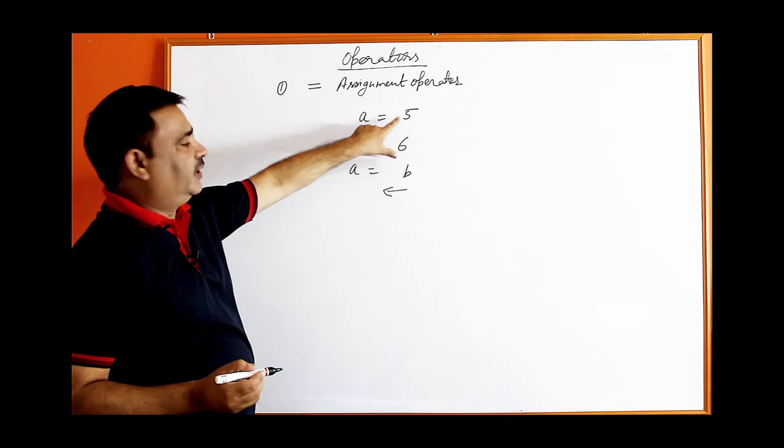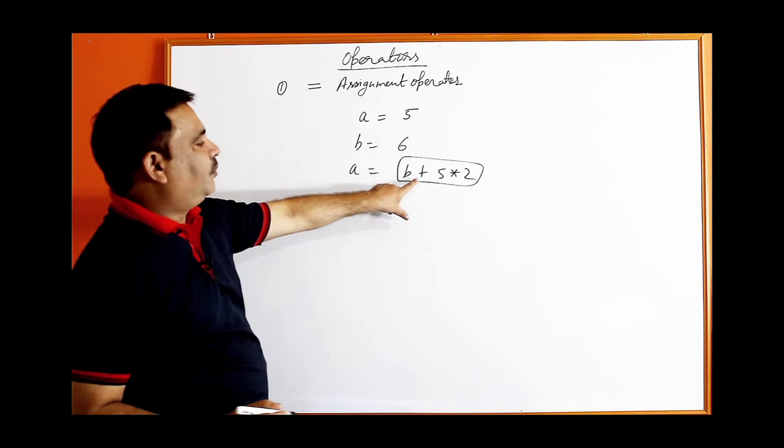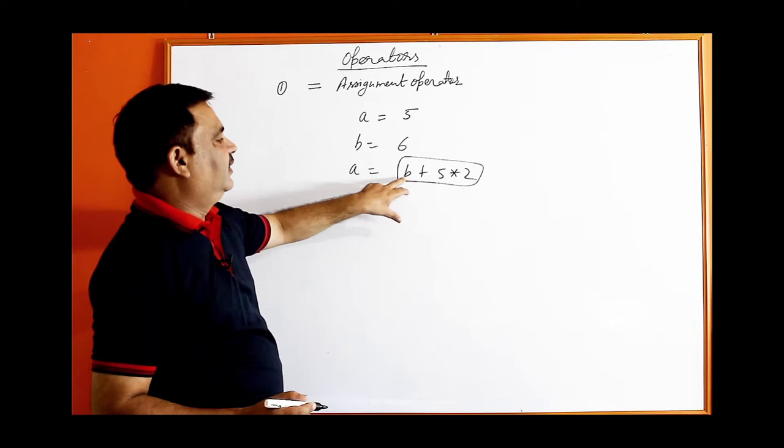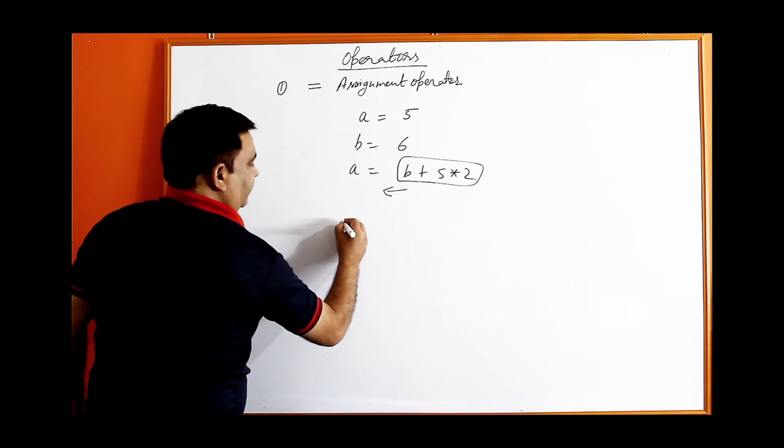The right side of an assignment can be a variable, a constant, or an expression like a equal to b plus 5 multiplied by something. That combination of operators and operands is called an expression. The value of the expression is assigned to the variable on the left side using the assignment operator.